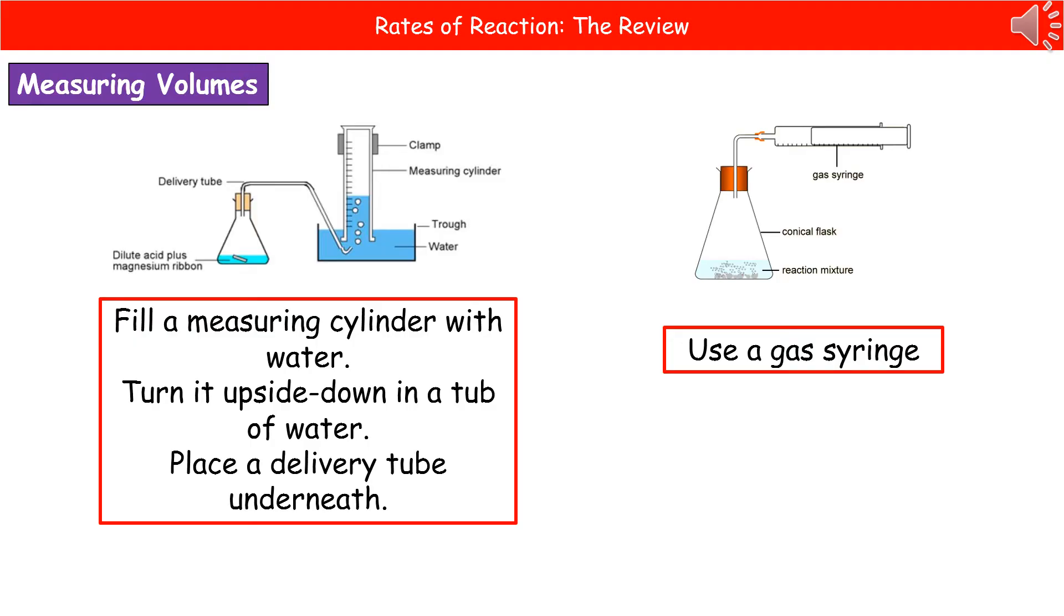So as the gas is produced in our reaction vessel, which in this case is a conical flask, the gas travels through the delivery tube into the measuring cylinder and displaces the water. So you can then just read the volume off the side of the measuring cylinder.